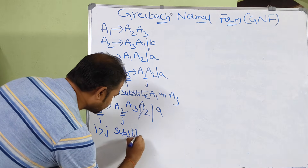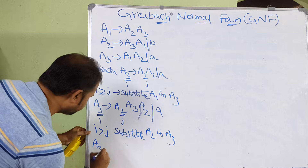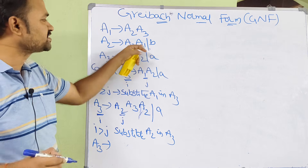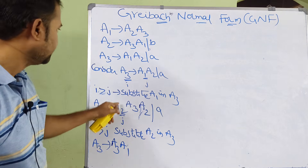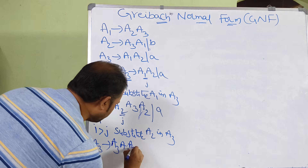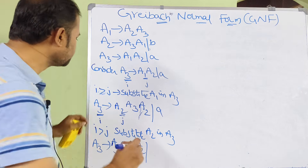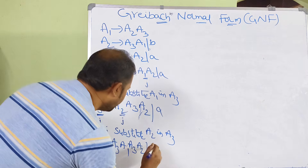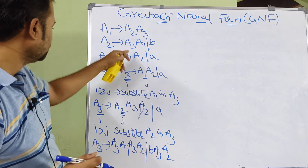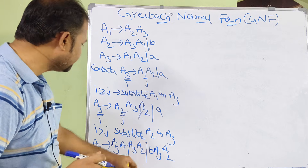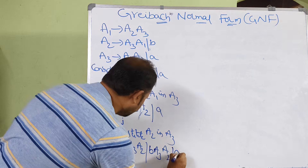Substituting A2 value in A3: there are two productions associated with A2 — A3, A1 and B. In place of A2, if we substitute A3, A1, we get: A3 produces A3, A1, A3, A2. In place of A2, if we substitute B, we get B, A3, A2. Additionally we have A. So A3 produces A3, A1, A3, A2 or B, A3, A2 or A.